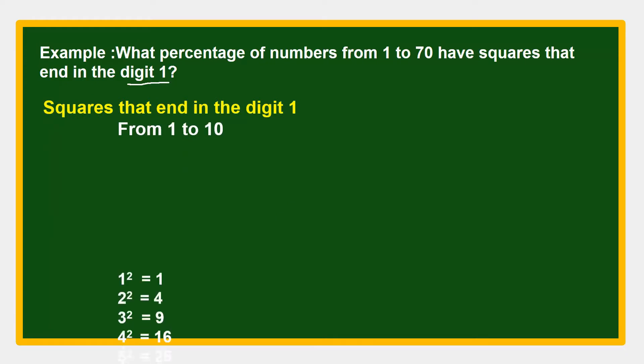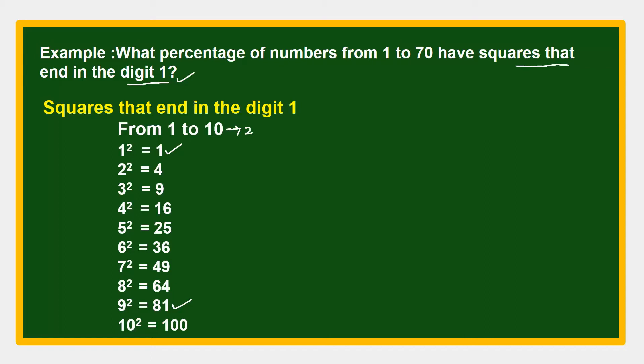First we have to find from 1 to 10. 1 squared equals 1, which satisfies the condition - squares that end in digit 1. 2 squared is 4, no. If you see like this, 9 squared is 81, which also ends in digit 1. So from 1 to 10, we got total 2.